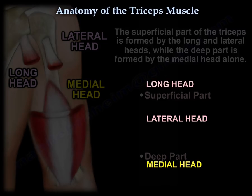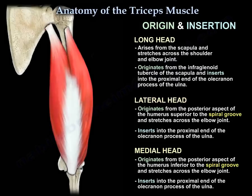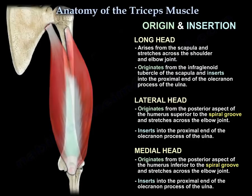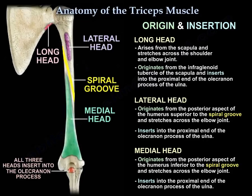The long head of the triceps arises from the scapula and stretches across the shoulder and the elbow joint. The origin is from the infraglenoid tubercle of the scapula and inserts into the proximal end of the olecranon process of the ulna.